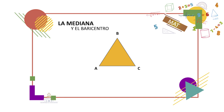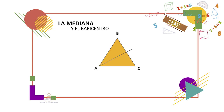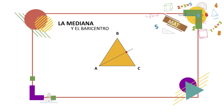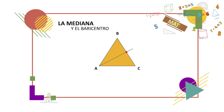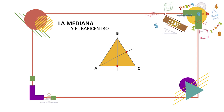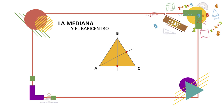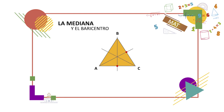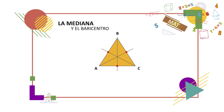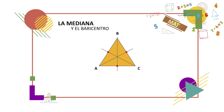Comenzaremos trazando la mediana desde el vértice A al punto medio de su lado opuesto, así que identificamos el punto medio y trazamos la mediana para ese vértice. Continuamos trazando la mediana desde el vértice B al punto medio de su lado opuesto, así que identificamos el punto medio y trazamos la mediana para ese vértice. Por último, trazamos la mediana desde el vértice C al punto medio de su lado opuesto, así que identificamos el punto medio y trazamos la mediana para ese vértice. Las medianas se han intersectado en un punto.